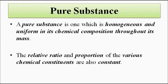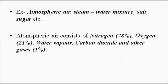A pure substance is one which is homogeneous in nature — uniform in its chemical composition throughout. It is a single-phase system. It is not necessary that it consists of only one constituent; it can have multiple constituents, but the ratio of those various constituents must be constant.